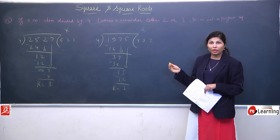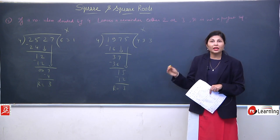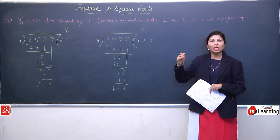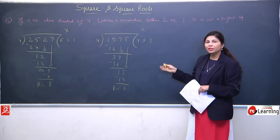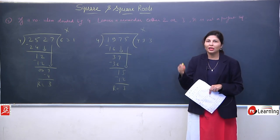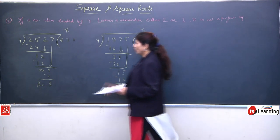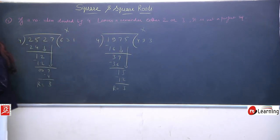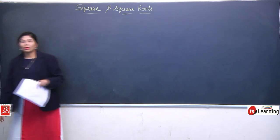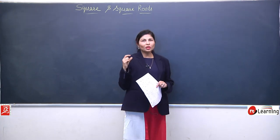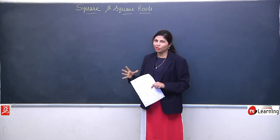So these two important properties — by using these properties you can easily check, jo bhi aapko objective short type questions aayenge, ki ye perfect square hai ya nahin hai. Ab ek bohat hi important concept hum padeenge, jisko aap short trick keh sakte hain. So now we will learn a very very important small concept which is very short — means aapko jo question hai usko bahut short karte ka.